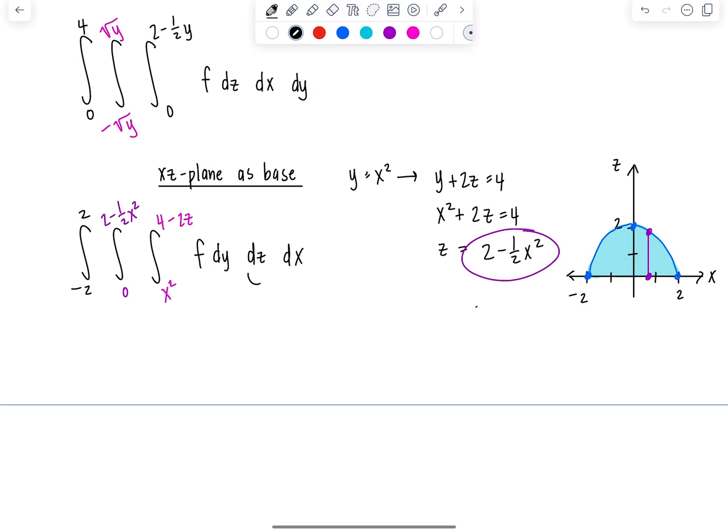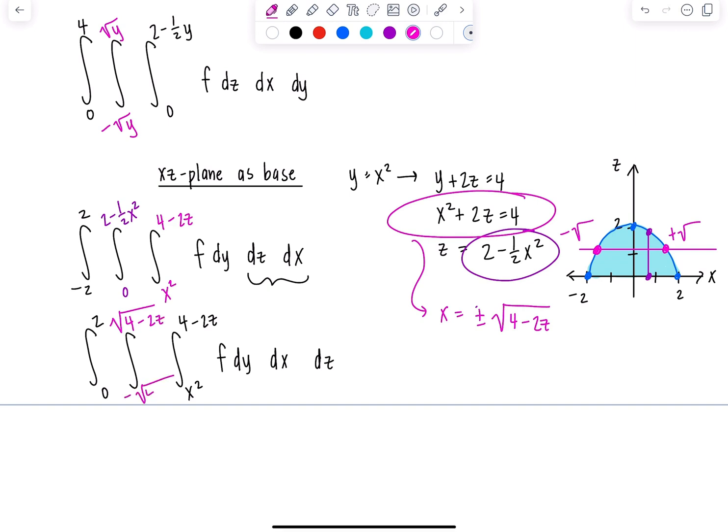It's pretty easy to switch it to DX DZ last. I'm going to keep DY first. So this is still X squared to four minus two Z. If DZ is last, limits for Z have to be constant, zero to two. Then limits for X - the lower limit is the left half of the parabola, upper limit is the right half. X equals plus or minus rad four minus two Z. So we have negative rad four minus two Z as the lower limit and rad four minus two Z as the upper limit.